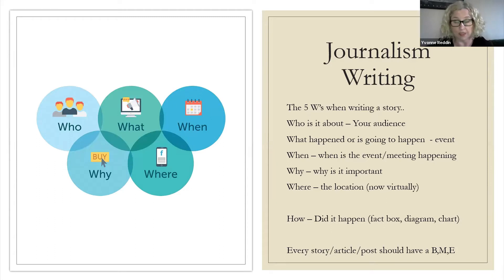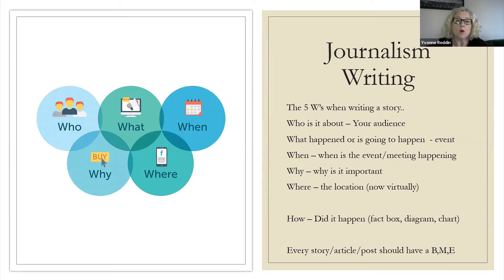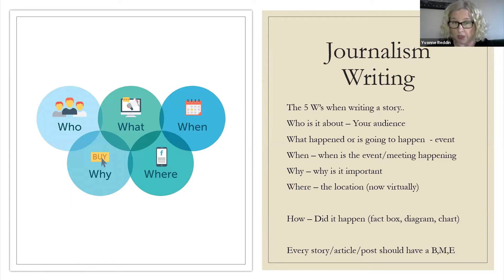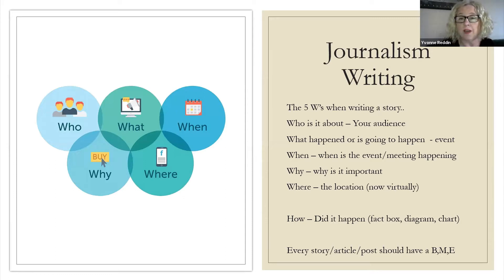How would you use the five W's? Who is your audience, who is it about? What's happened, what's the event? When is it going to happen? Why is it important to your readers? And where is it — and a lot of content now is virtual, so that's webinars and online locations. So it's who, what, when, why, and where.